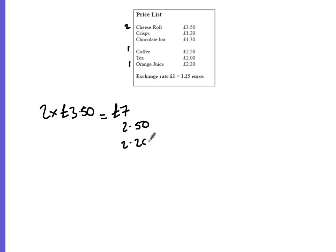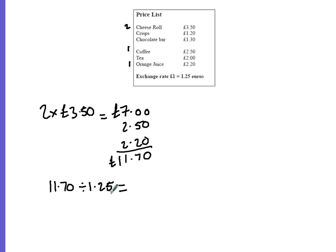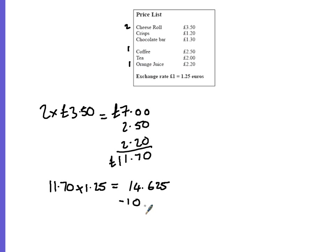We also have £2.20. Adding these up gives us £11.70. Now we need to convert that into euros. For every pound we get 1.25 euros, so we multiply 11.70 by 1.25, which gives us 14.625 euros. If we take the 10 euro note off that, we have 4.625 euros left.